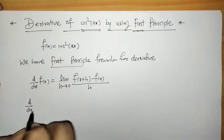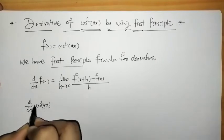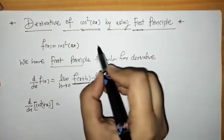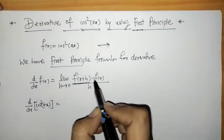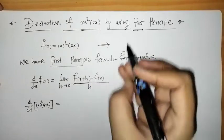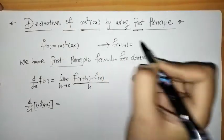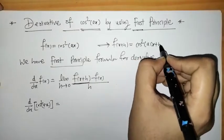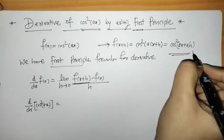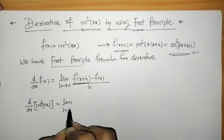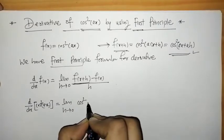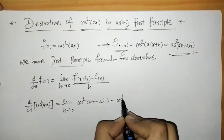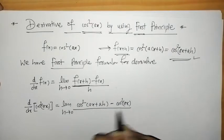So here we have to find the derivative of cos squared ax. For this we need f(x+h). We have to put the value of f(x+h) and f(x). f(x+h) is obtained by replacing x by x+h. So here we have cos squared of a(x+h) minus f(x) which is cos squared ax, all upon h.